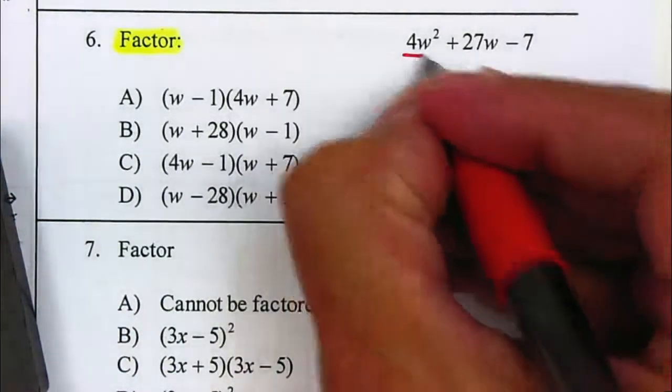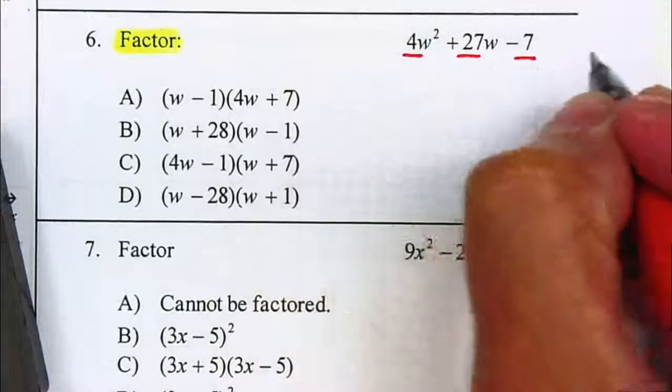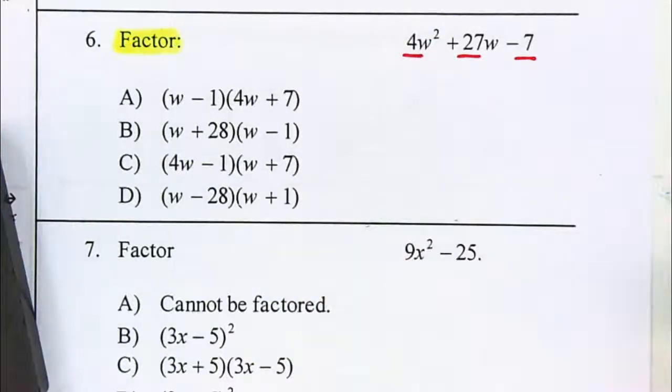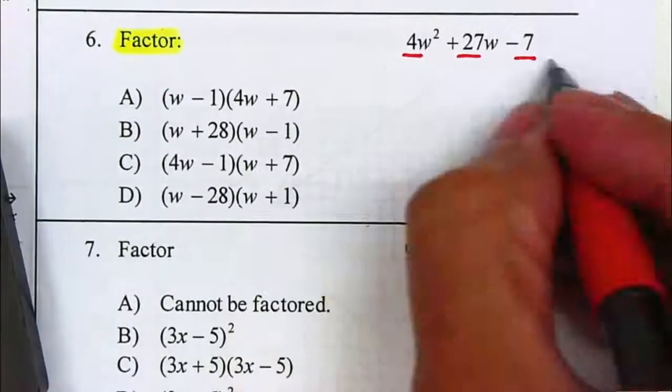Is there a number that divides 4, 27, and 7? No. Do they all have a W? No.